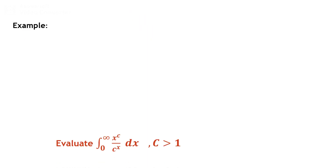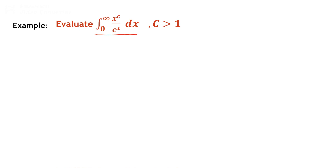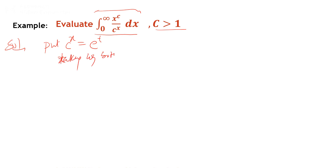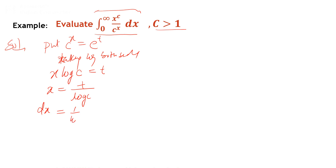Example 3: Evaluate the integral from 0 to infinity of x^c / c^x dx, where c > 1. Using the gamma function, we substitute c^x = e^t. Taking log of both sides: x·log c = t, so x = t / log c. Differentiating, dx = (1 / log c) dt.